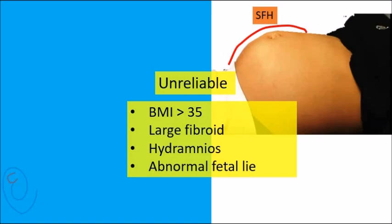Remember that SFH is unreliable in certain cases, such as BMI more than 35, large fibroids, hydramnios, or abnormal fetal lie.